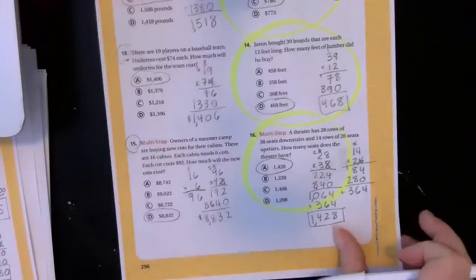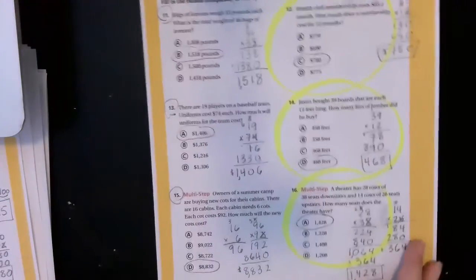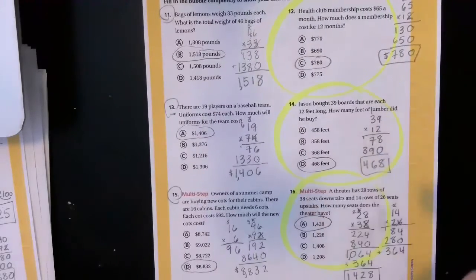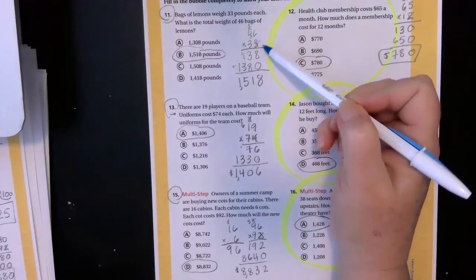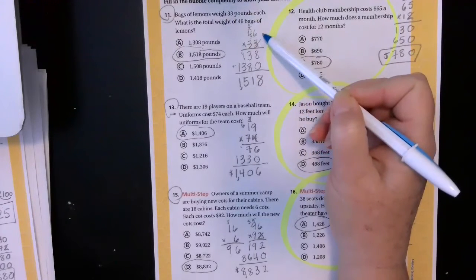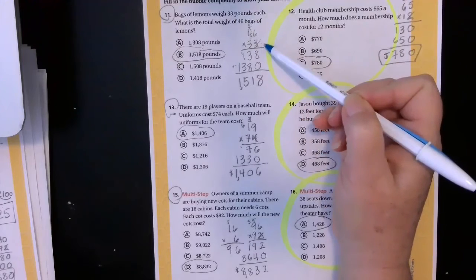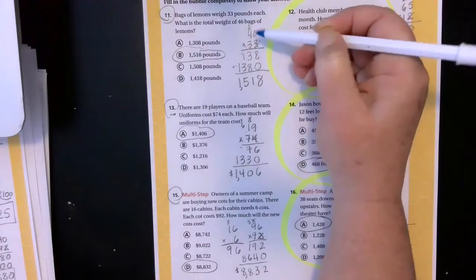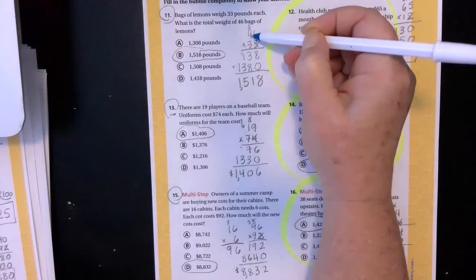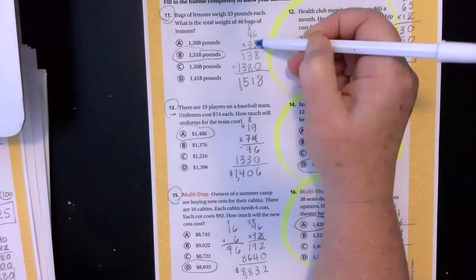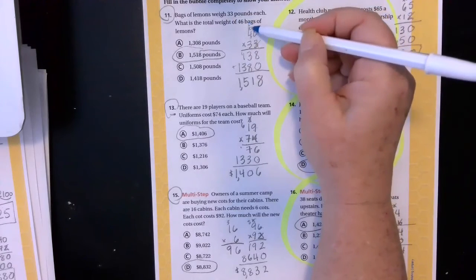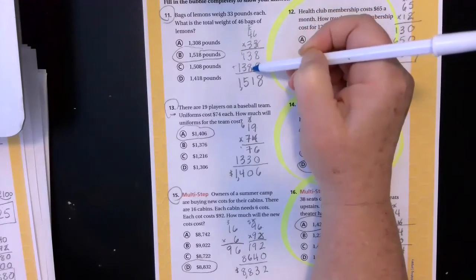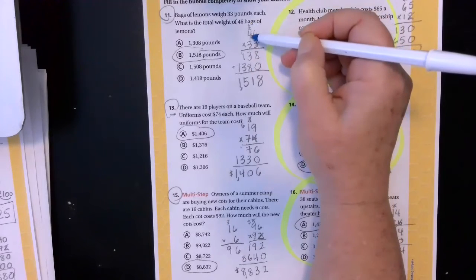And then the last page y'all had to do with me yesterday, Monday, we did 11, 13, 15. So bags of lemons weigh 33 pounds each. What's the total weight of 46 bags of lemon? That's 46 bags of 33 pounds each. That's a lot of lemons. So I'm going to multiply six, three times six is 18. Put down my eight, carry my one. Three times four is 12. Plus one is 13. Cross out my ones place. Put my zero because I'm multiplying by my tens. So three times six is 18 again. Put down my eight, carry my one. Three times four is 12. Plus one is 13 again. 138, 138. Kind of fun. And then eight plus zero is eight.